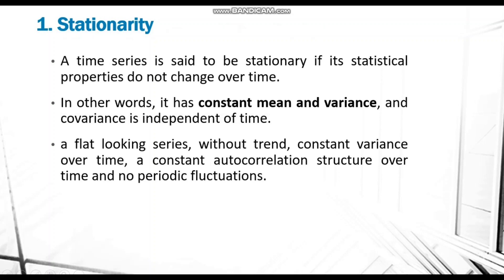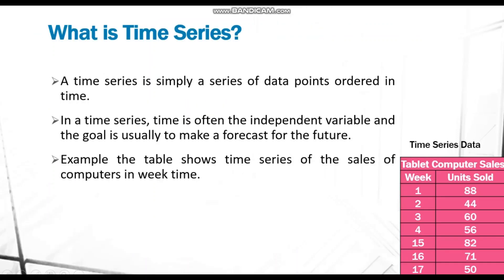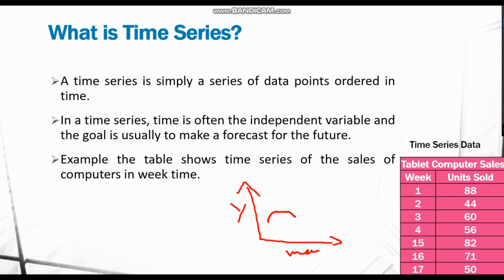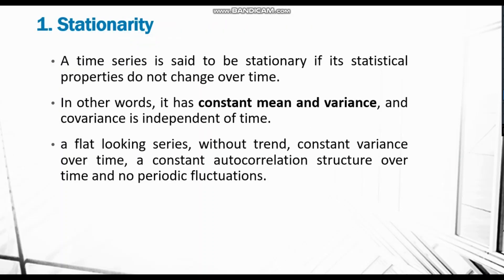What is stationarity? When you plot the time series graph, the x-axis has time and the y-axis has your variable — for example, week on x-axis and units sold on y-axis. Stationarity means you have a constant mean, constant variance, and covariance independent of time — a flat-looking surface with no trend or fluctuations.